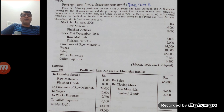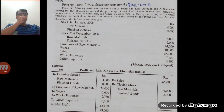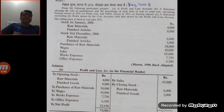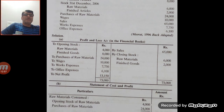Solution: profit and loss account in the financial book. Opening stock of raw material: 4,000; opening stock of finished articles: 8,000. Closing stocks credited: 6,000 and 2,000. Purchases of raw material: 24,000; wages: 10,000; sales: 65,000; works expenses: 7,750; office expenses: 6,100. After totalling, net profit comes to 13,150 as per financial book. Now calculate the cost sheet.